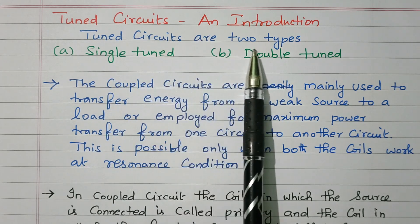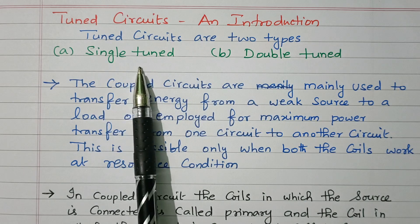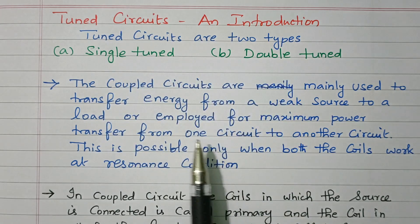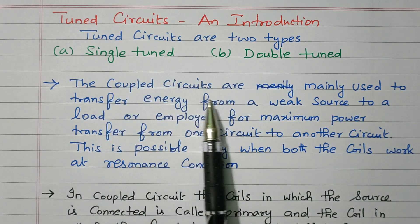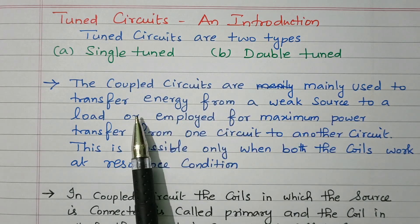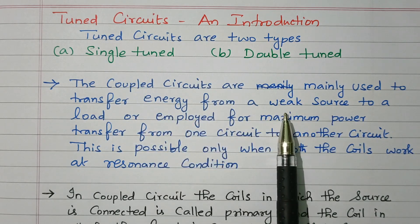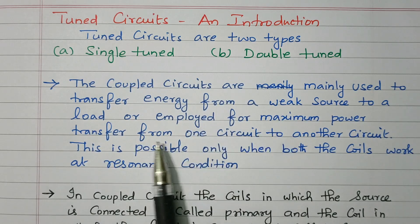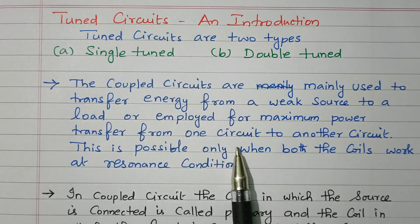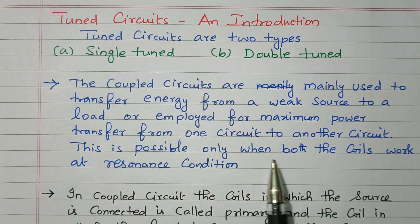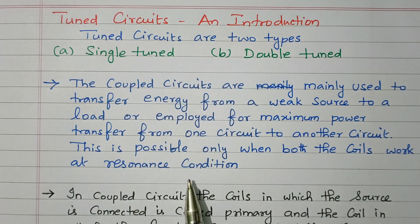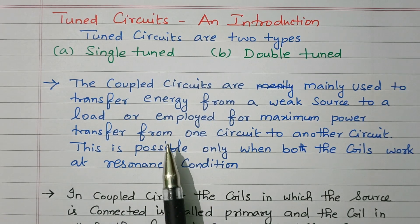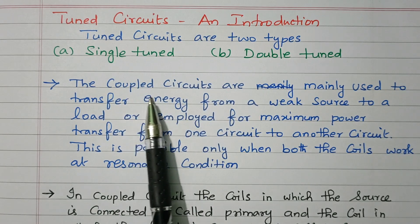Tuned circuits are of two types: single tuned and double tuned. The coupled circuits are mainly used to transfer energy from a weak source to a load, or employed for maximum power transfer from one circuit to another circuit. This is possible only when both coils are at resonant condition.